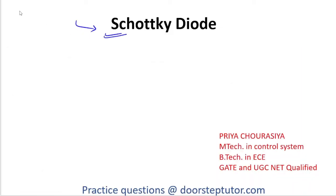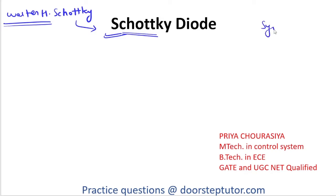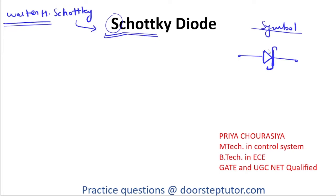This name is given by the scientist Walter H. Schottky. After the name of this scientist who invented the Schottky effect, the name is Schottky. The symbol for the Schottky Diode is just like a regular diode but with an S symbol towards the vertical line. This S symbol represents the S of the Schottky Diode, and this is how you can identify the symbol for the Schottky Diode.